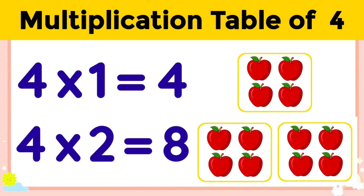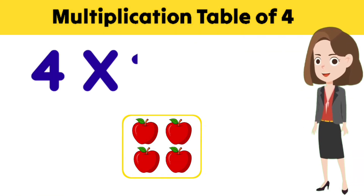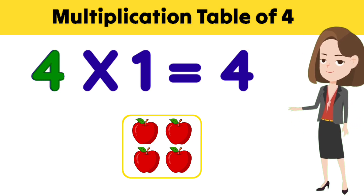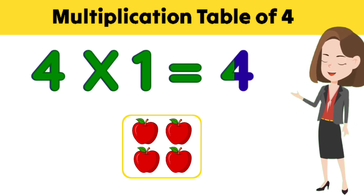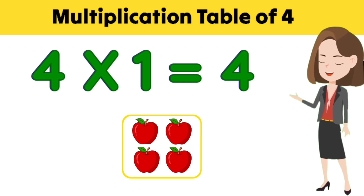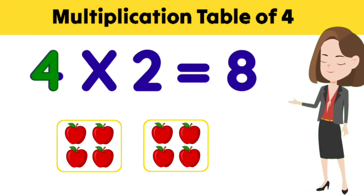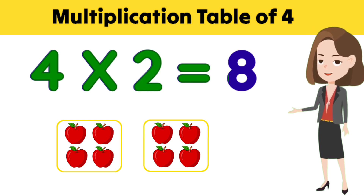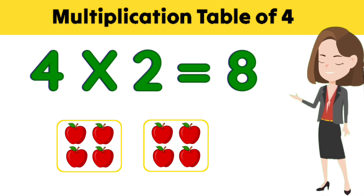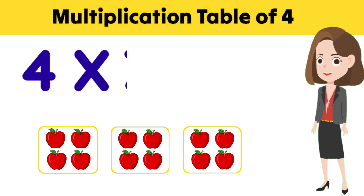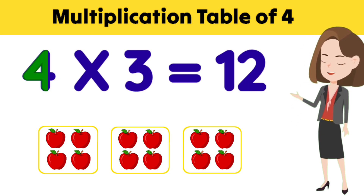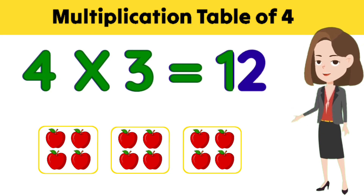Multiplication table of 4 — come, let's read and learn the multiplication table of 4. Let's begin. Four ones is four. Four twos are eight.